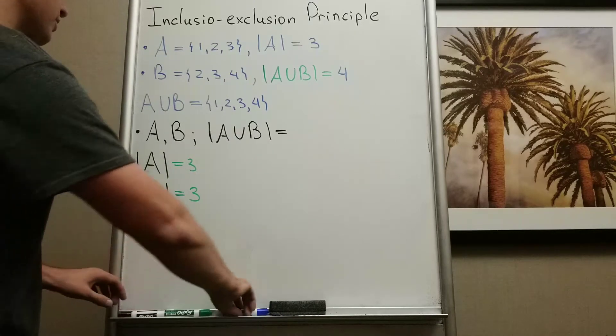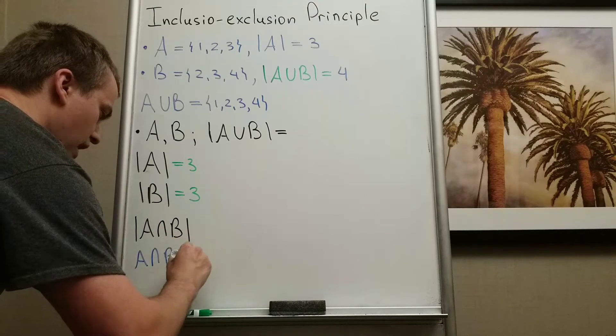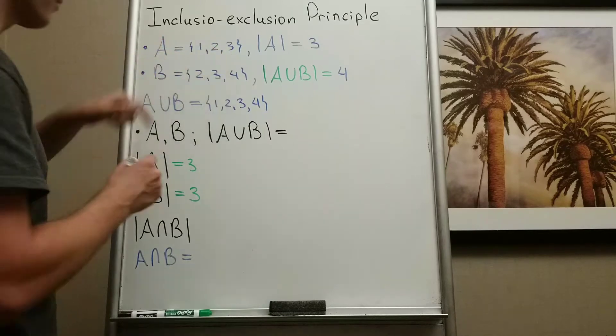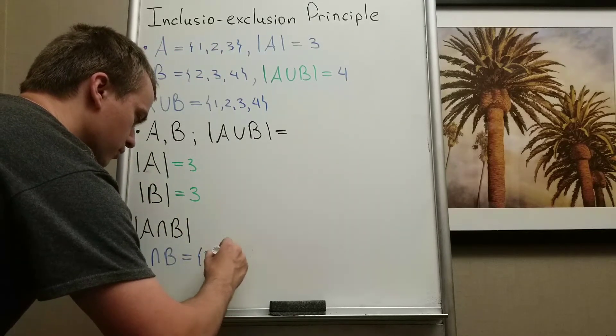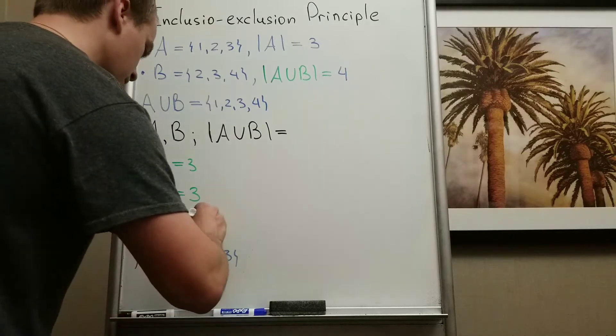How many elements do I have in A intersection B? A intersection B is just going to be the elements that lie inside A and inside B. So I have only 2 and 3. So the number of elements in A intersection B equals 2.